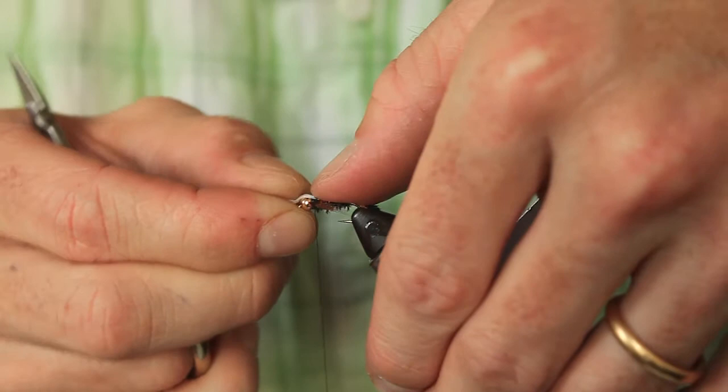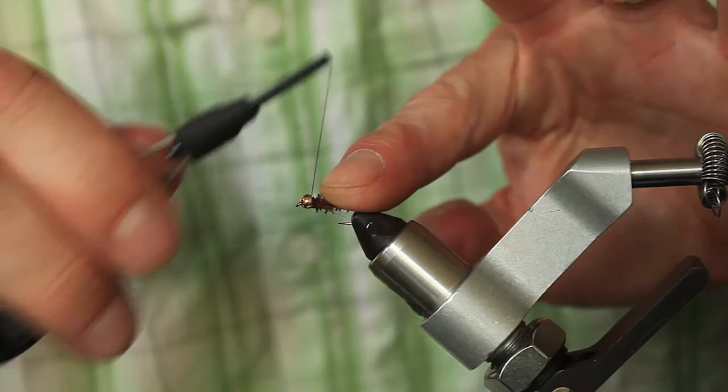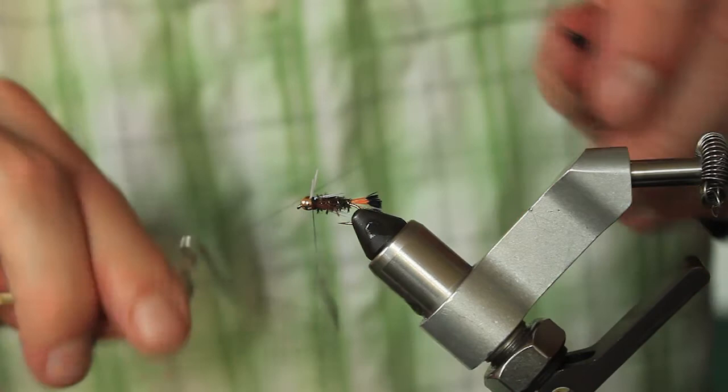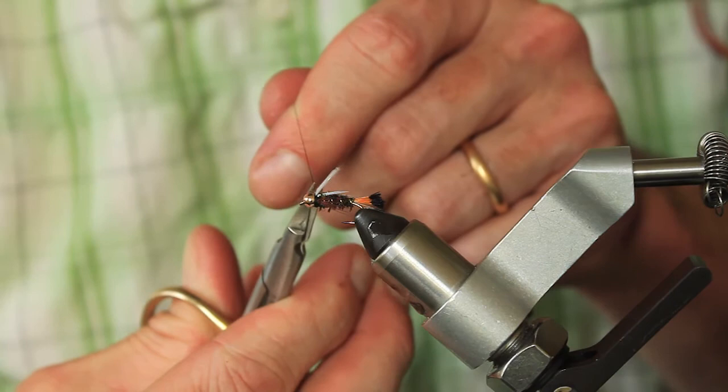Use your thumb, one wrap, gather, two secures, three locks down. Heck, why don't put a fourth for good measure. One in front there. At this point, guys, you introduce your whip finisher. At this point, we can trim our thread and we can trim our goose biots.